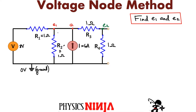So the first thing we want to do, if you're new to this method, is just pick a direction for the current. It doesn't matter whether you get the right answer initially. So I'm going to assume we're going to have a current flowing like this, then a current like this, a current flowing up, and let's set the current flowing down over here. That's important because it will identify the voltage drop across each resistor.